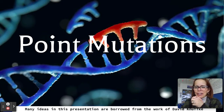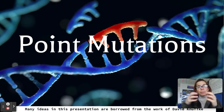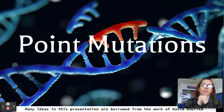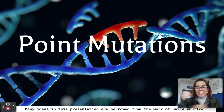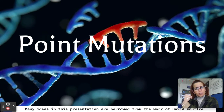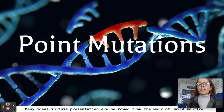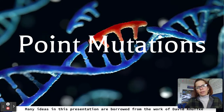We've talked about inversions, where part of a chromosome completely flips over, and translocations, where part of a chromosome breaks away and attaches onto a different chromosome. Those are chromosomal mutations. This is point mutations.